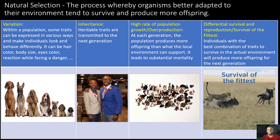Let's take a deeper dive into natural selection — it's the process whereby organisms better adapted to their environment tend to survive and produce more offspring. There are four key principles of natural selection. The first would be variation. Within a population, some traits can be expressed in various ways and make individuals look and behave differently — it can be hair color, body size, eye color, reaction while facing danger, and so on. Looking at these dogs, you can notice that they have varying sizes, shapes, and hair colors.